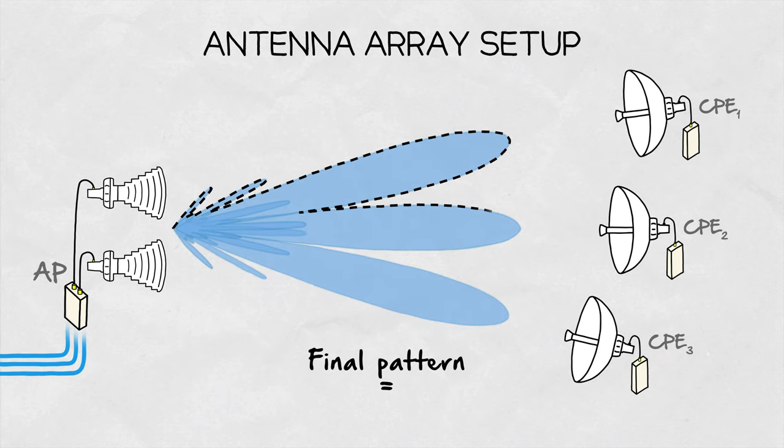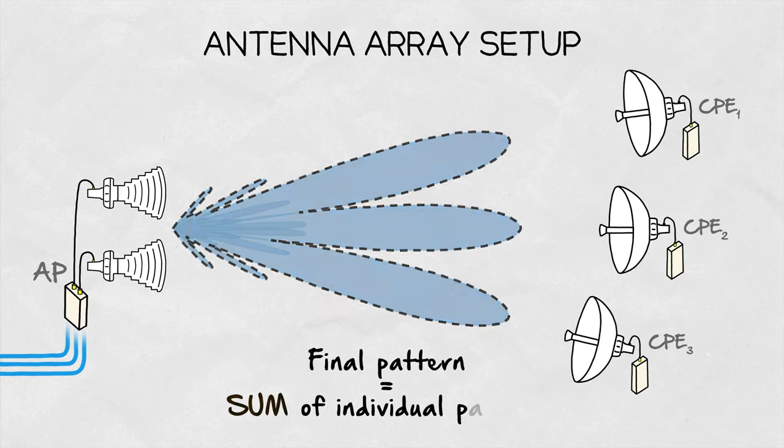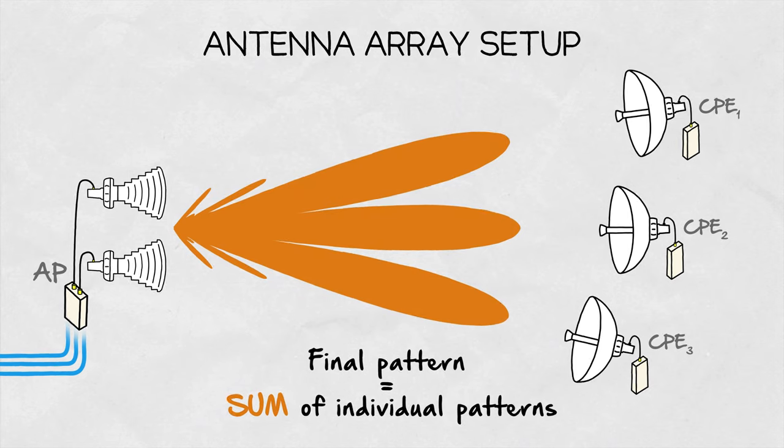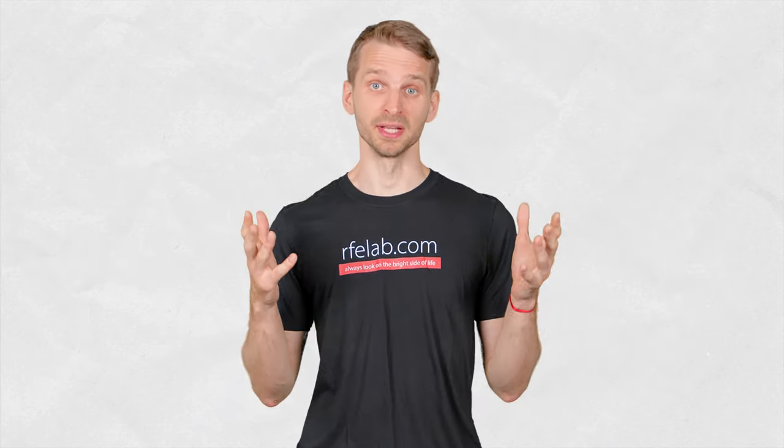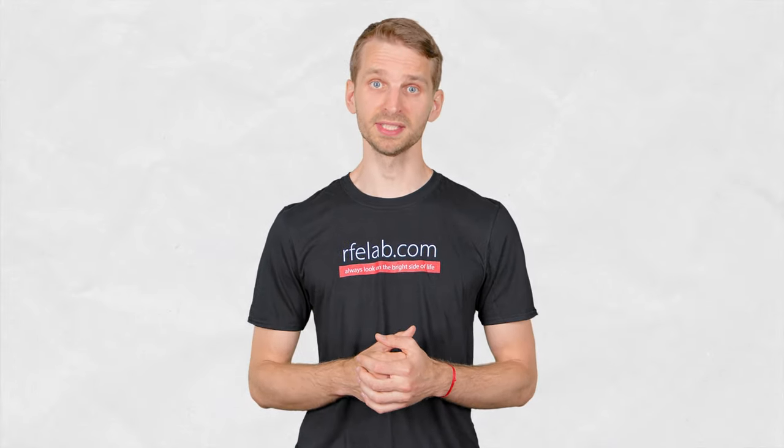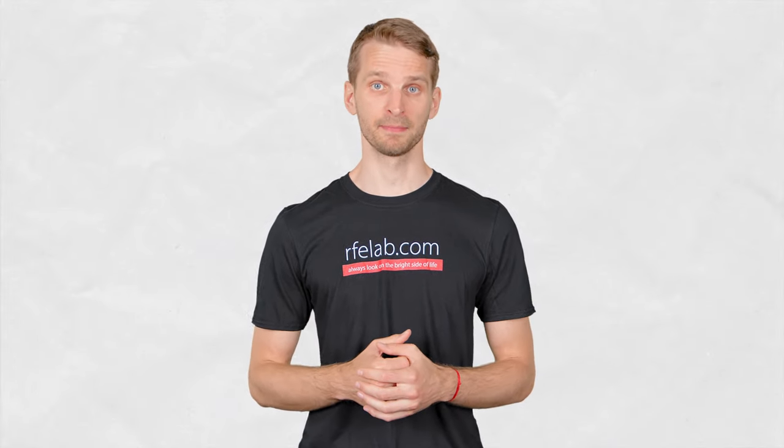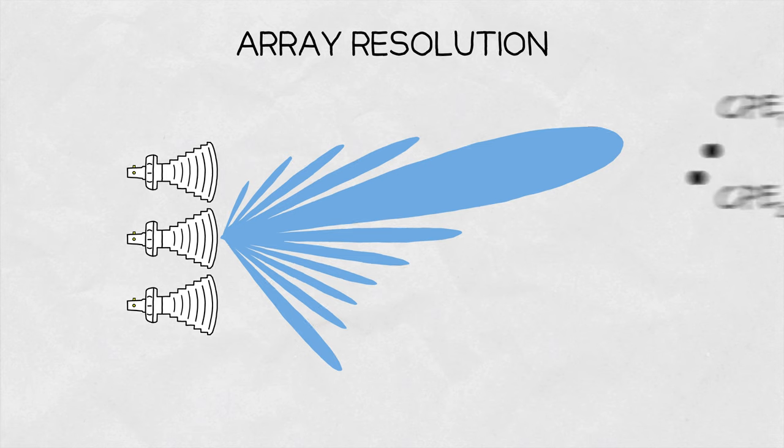Once all antenna array setups for each CPE are known, the final radiation pattern is a sum of the individual patterns. Because of that, there is a limit to how many CPEs can be served at the same time. Minimum beam width size limits how close the served client stations can be.